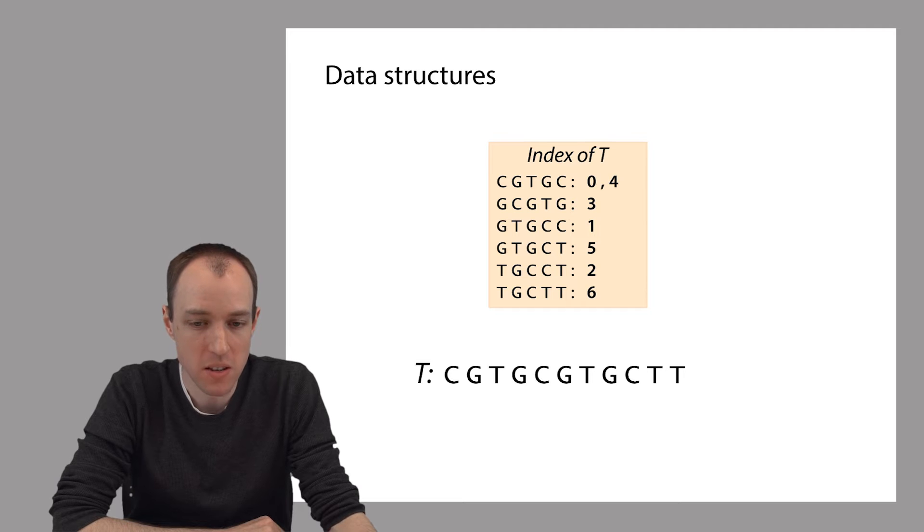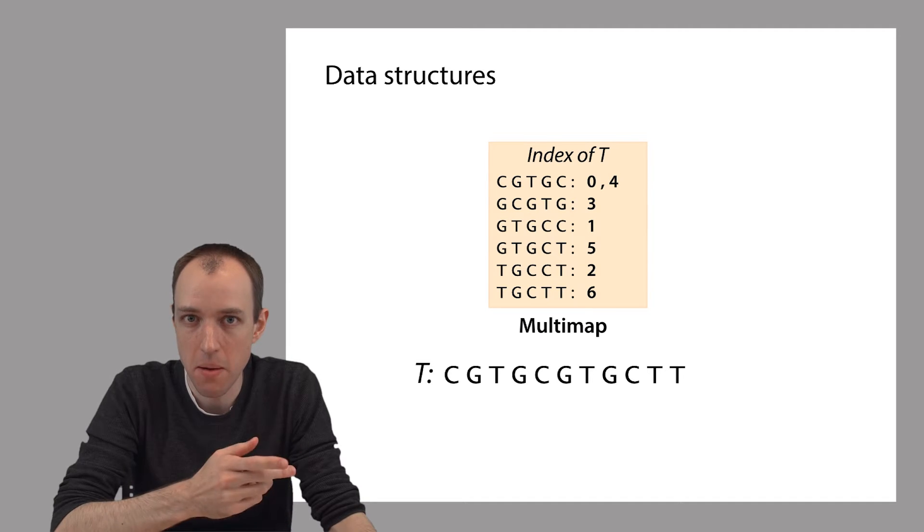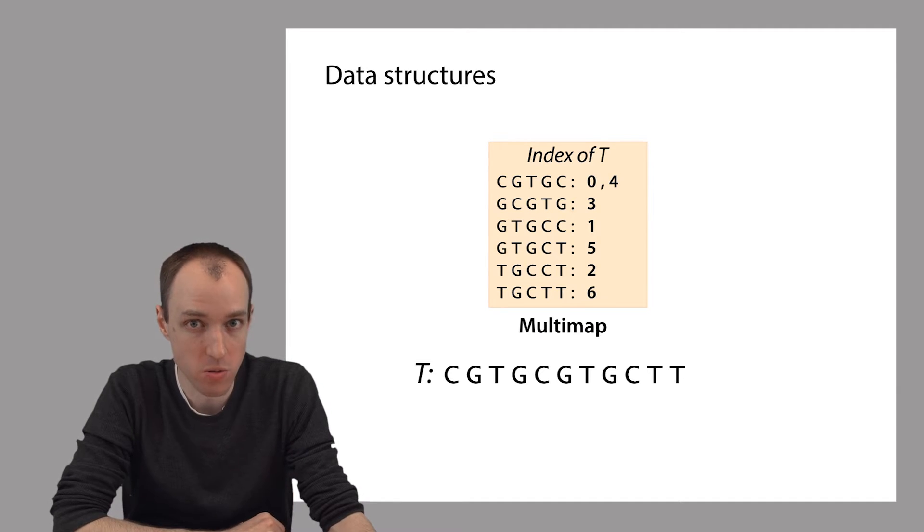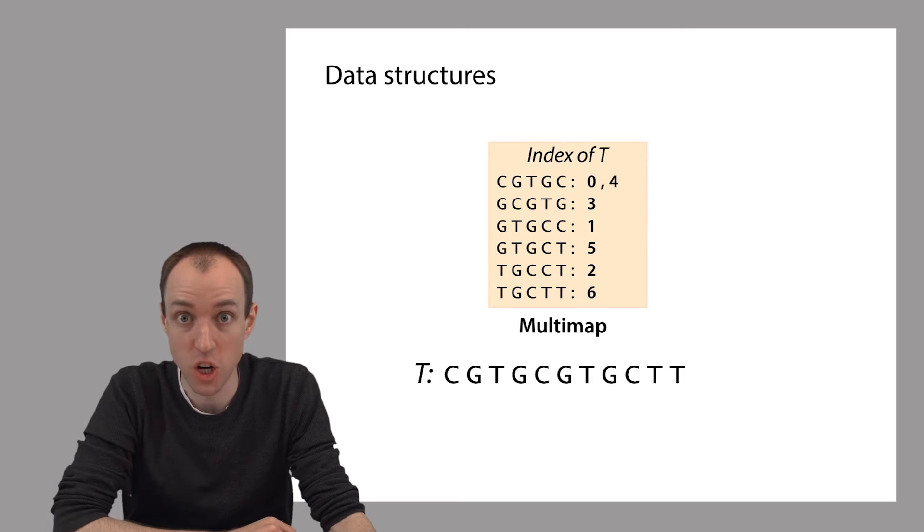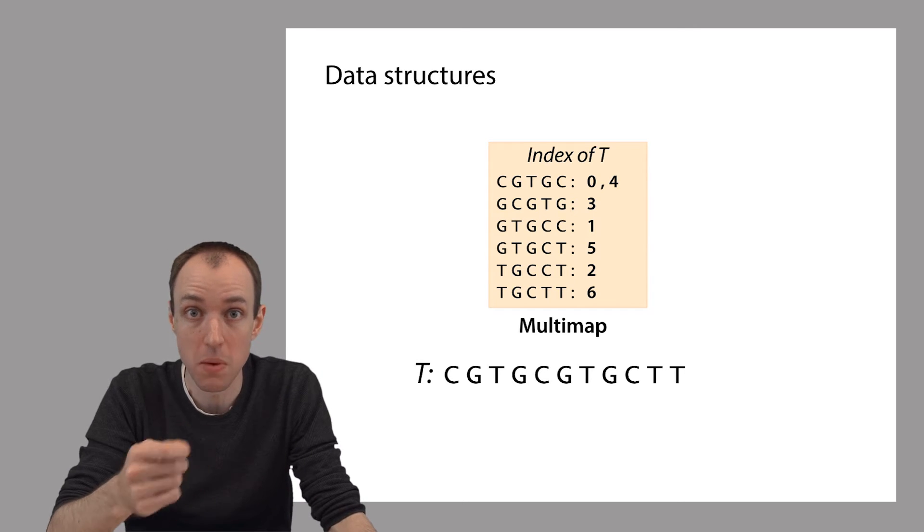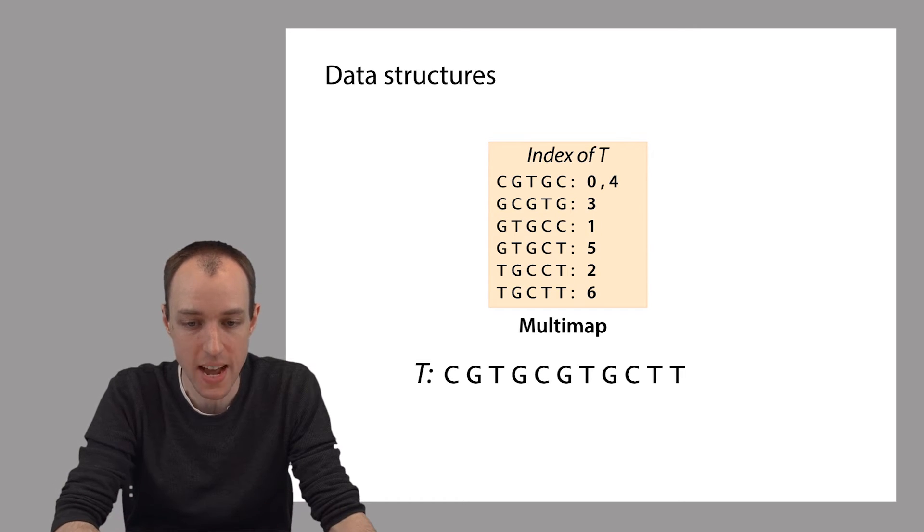It's a map because it associates keys, k-mers in this case, with values, offsets in the genome. And it's a multi-map because a k-mer may be associated with many different offsets in the genome. A k-mer could occur many places within the genome, within the text.